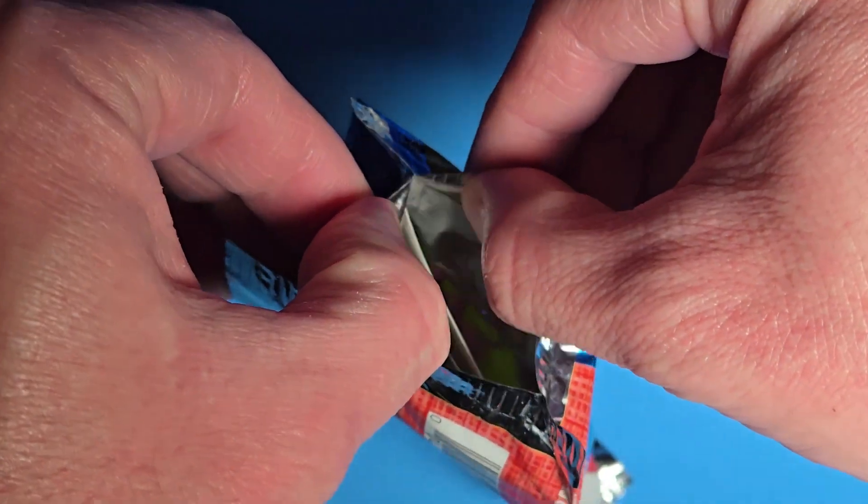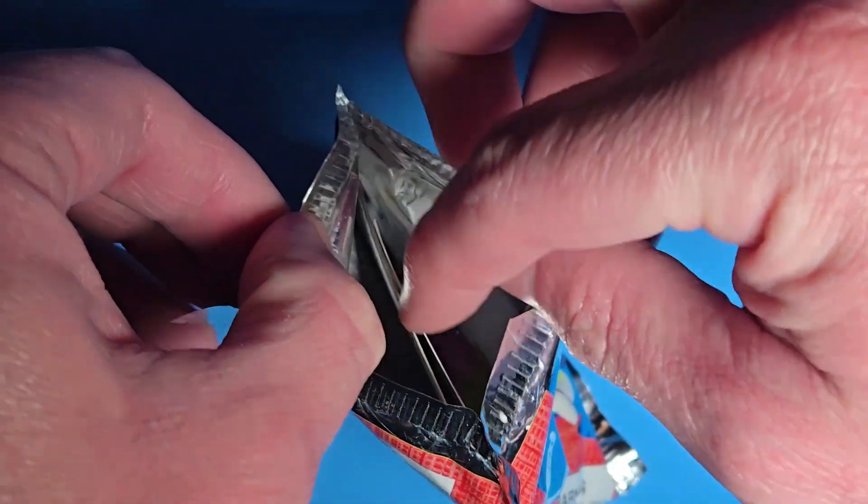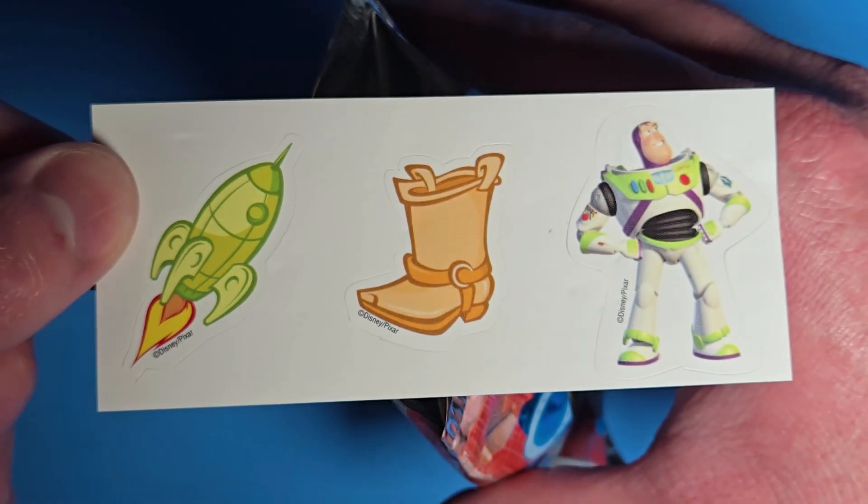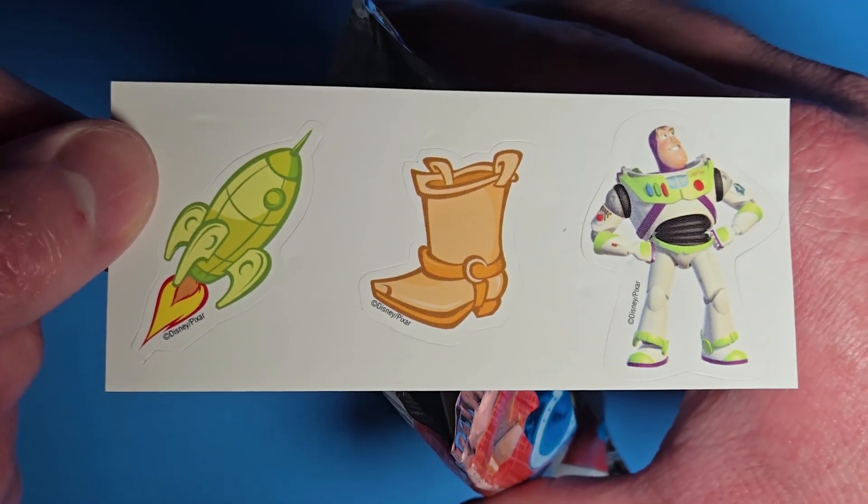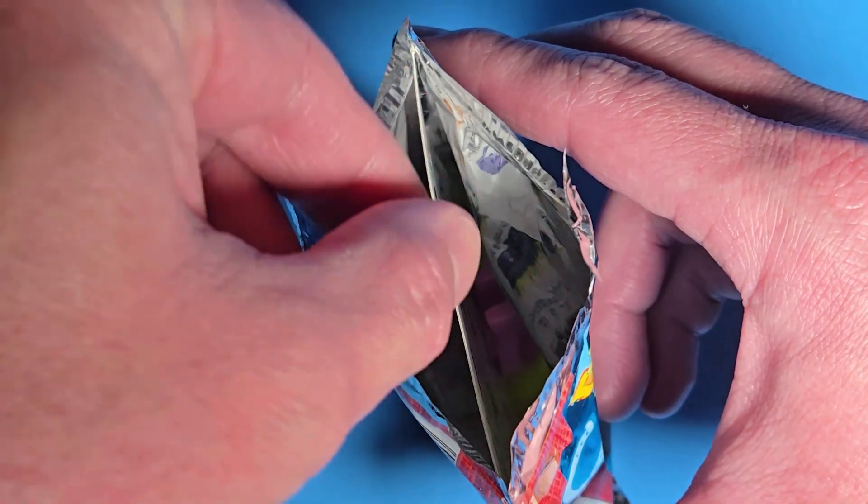I like to collect the Crazy Bones foil packs and try to keep them in good shape without tearing the packs when opening them. A sheet of three stickers resembling the bones comes in each pack. I'm happy to have gotten Buzz on this one. A character checklist is also included in every pack.